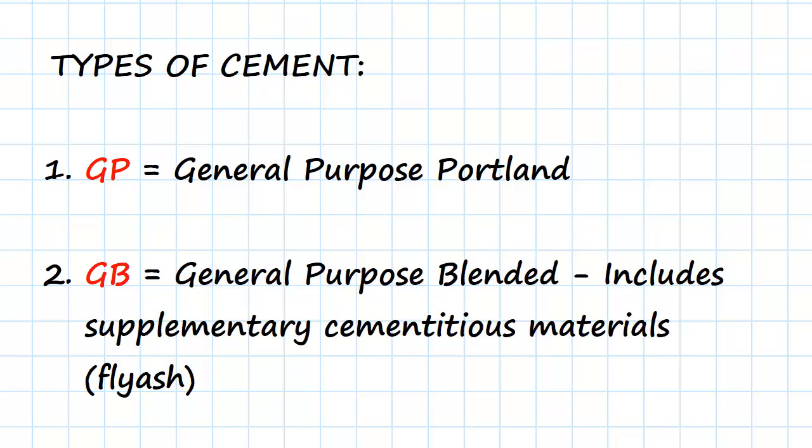An example of this is General Purpose Blended cement, which is GB. This is part General Purpose, just your regular Portland cement, but it also includes supplementary cementitious materials, in particular fly ash, and we're going to look at that in a coming video.